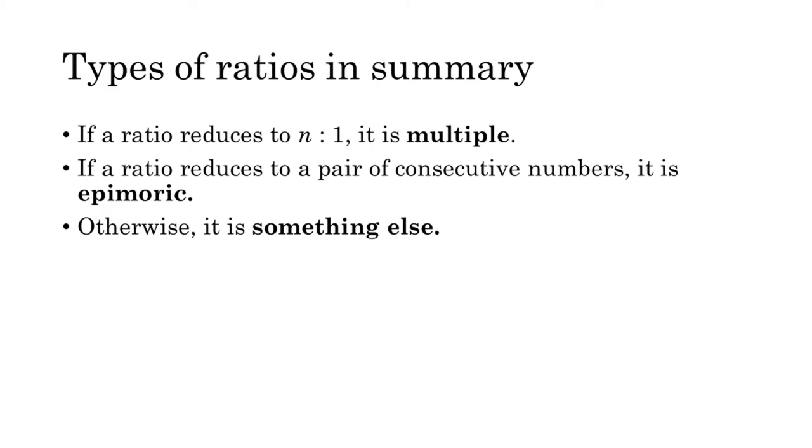These categories exhaust all possibilities for ratios between numbers that have a common measure. We can boil all this material down to three simple statements: if a ratio reduces to n to 1, then it is multiple; if a ratio reduces to a pair of consecutive numbers, it is epimoric; otherwise, the ratio is something else.